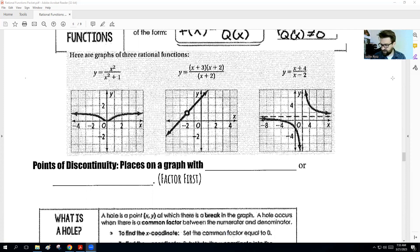So first off, points of discontinuity are places on a graph with specifically that have a hole or have an asymptote. Now, if we look here, if we look at our function and our examples, we might notice some things here. This hole here is when x equals negative 2. At negative 2, we have a hole.